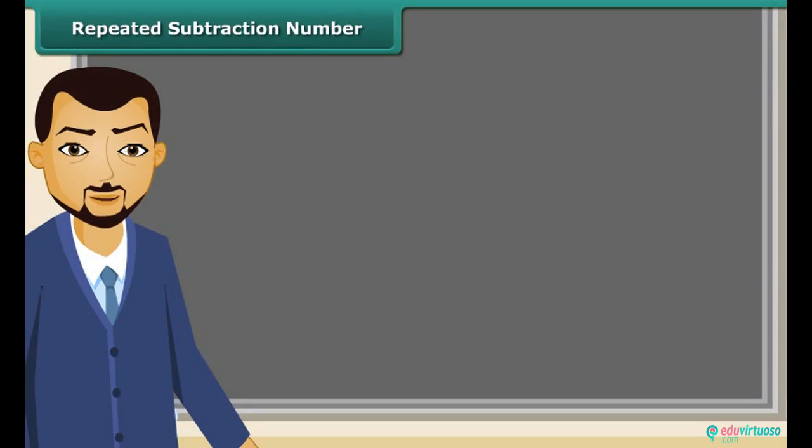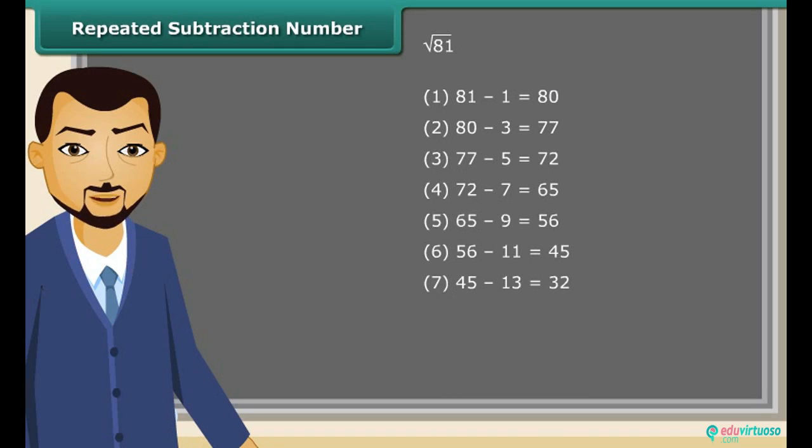We can find the square root of a given number using repeated subtraction method. Consider the square root of 81. Just subtract successive odd numbers from 81, starting from 1 till the difference becomes 0. It took 9 steps to get the difference as 0. Therefore the square root of 81 is 9.